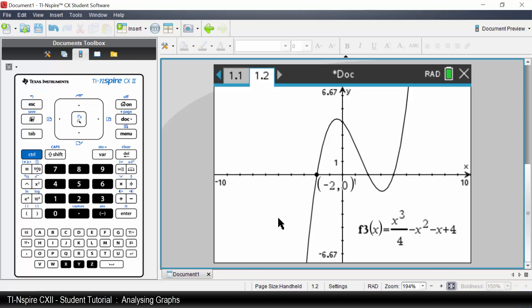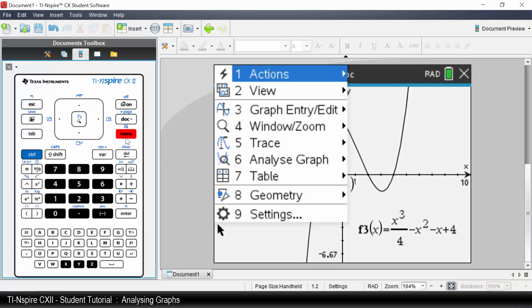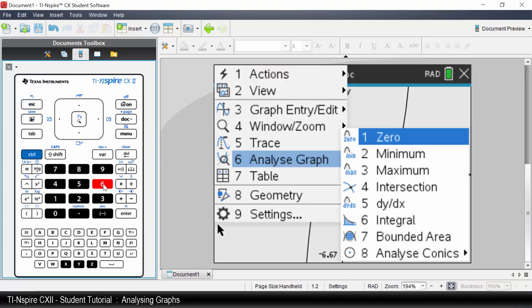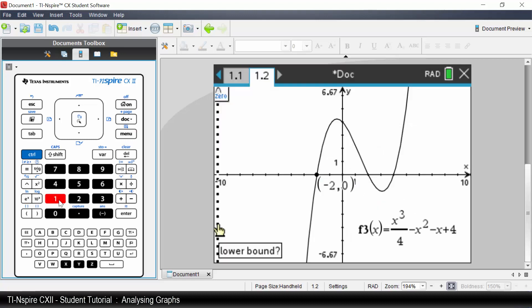Let's solve for the zero that looks like x being 4. Press Menu. Select Analyze Graph. Select Zero. Let's enter the lower and upper bounds. 3. Enter. 5. Enter.